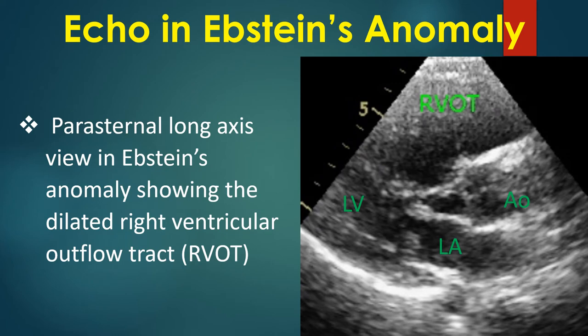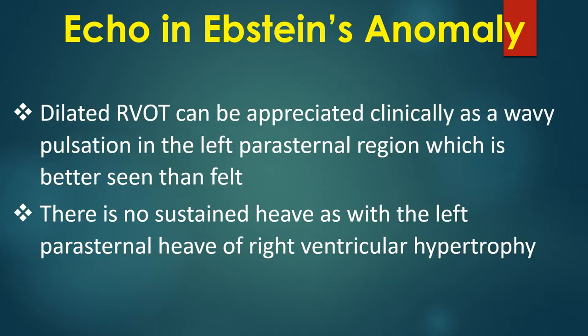Parasternal long axis view in Epstein's anomaly showing the dilated right ventricular outflow tract. Dilated RVOT can be appreciated clinically as a wavy pulsation in the left parasternal region, which is better seen than felt. There is no sustained heave, as would be seen with the left parasternal heave of right ventricular hypertrophy.